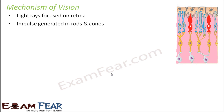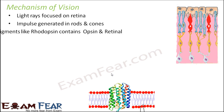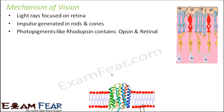An impulse is generated in the rods and cones, which are the photoreceptor cells. They contain photopigments that receive light of specific wavelengths and generate an electrical impulse. One example of a photopigment is rhodopsin, which is present in the rods. Rhodopsin contains a protein called opsin with a cofactor aldehyde called retinal.